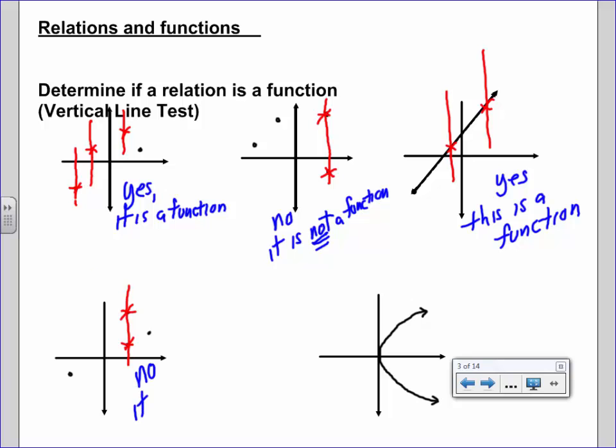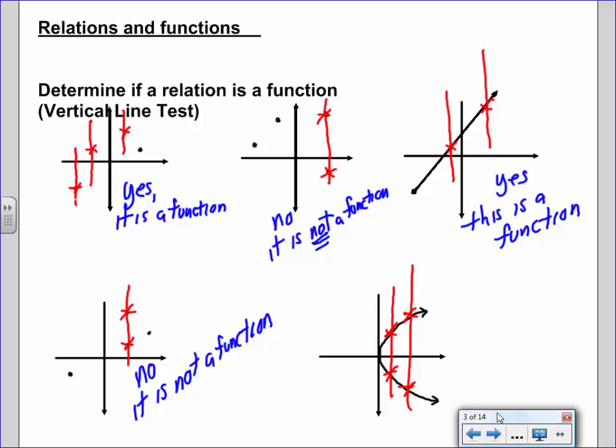Take a look at the next one, see what you think about that. You think that is a function or not a function? Well let's see, if you said no you're correct. There are several places we could draw, we only have to draw one where it hits twice and it fails the test. Maybe you drew your line over here. If there is anywhere at all that you can draw a line and it hits more than one time, it fails the test and no, it is not a function.